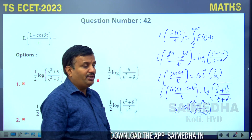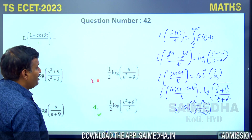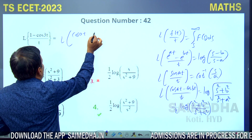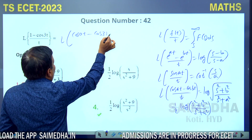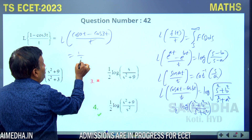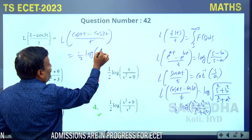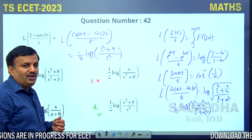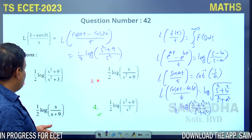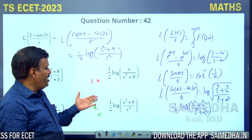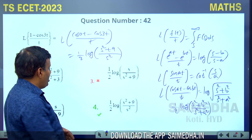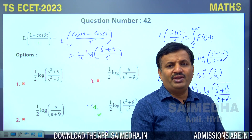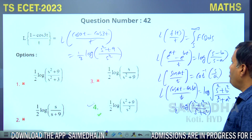We write (1-cos3t)/t as (cos0·t - cos3t)/t. Applying the formula gives (1/2)log((s²+9)/s²). Option 4 is the correct answer.